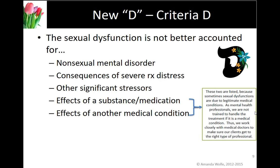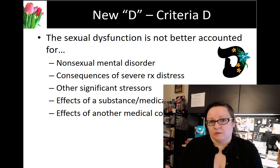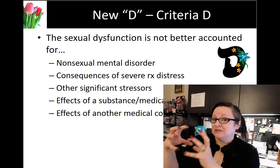The second rule-out is consequences of severe relationship distress. If people have a very chaotic, tumultuous relationship, possibly on the verge of divorce, of course the sex is bad — don't double-whammy them. The source of pathology is the relationship, not the person. The third rule-out is other significant stressors. If someone is majorly stressed, of course there's an impact to sex. The source of pathology is the stressor, and that person needs stress management, not a sexual dysfunction diagnosis.